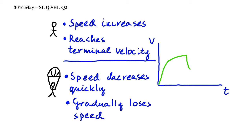Finally, after slowing down quickly, she gradually loses speed before reaching the ground, which will look like this on the graph. Therefore, we can conclude that the answer to this question is A.